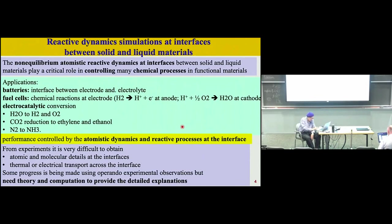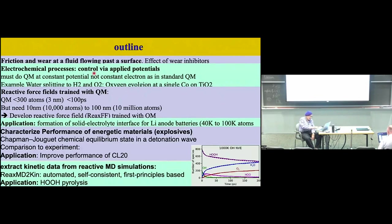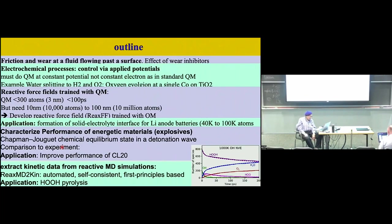The outline: I'm going to cover friction at a fluid interface, and talk about electrochemical processes where the potential is constant, not the number of electrons. We'll talk about reactive force fields that can handle up to a million atoms, trained with quantum mechanics. We'll look at the interface between the electrolyte and lithium metal anode — not lithium ion, but lithium metal anode — and characterization of energetic materials and explosives dealing with the C-J point that determines performance. If we have time, I'll talk about how to get kinetic data from reactive simulations.